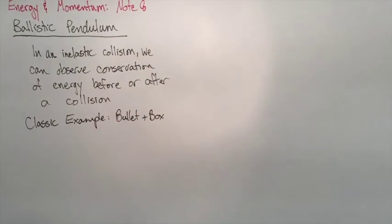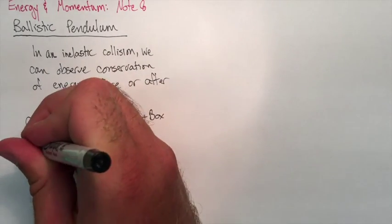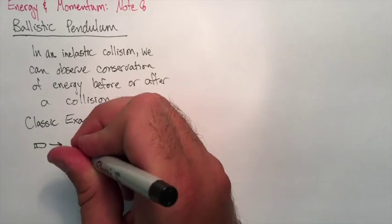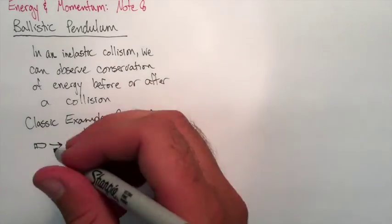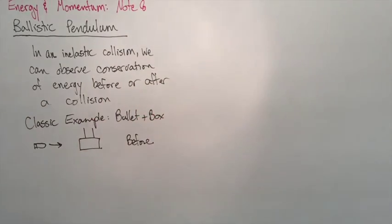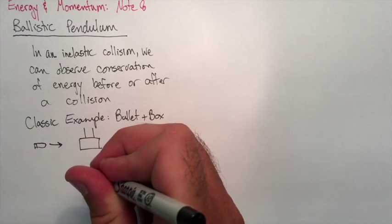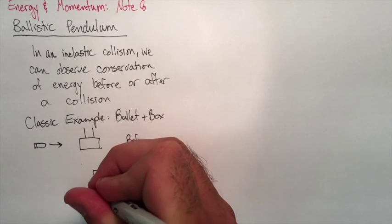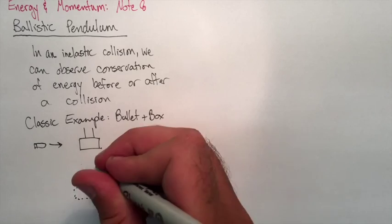We're going to draw this classical example, the bullet in the box. We have that bullet moving forward, the box is hanging on the strings. We get the inelastic collision where the bullet embeds itself in the box, and then they swing up to some height, which we'll call H.